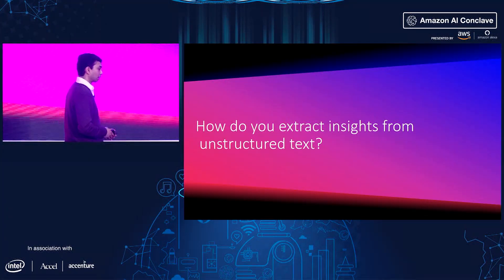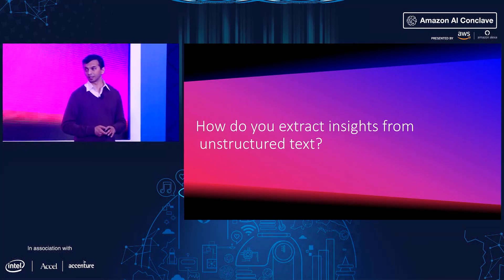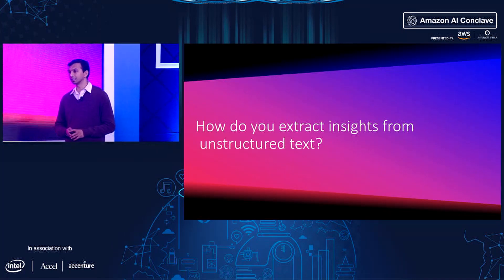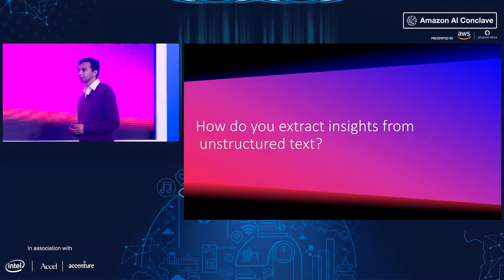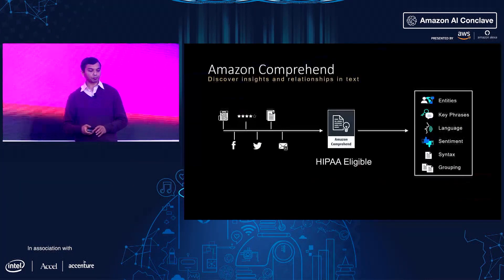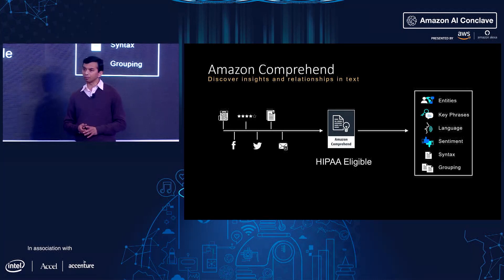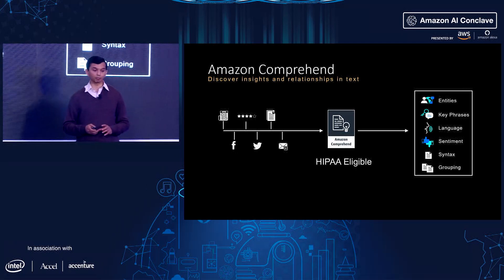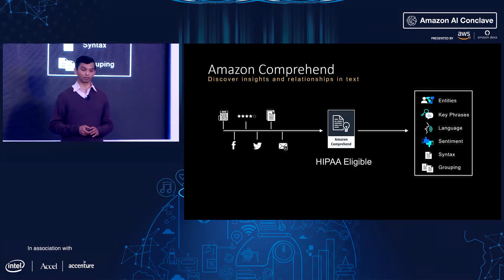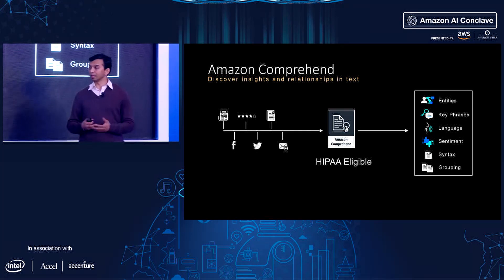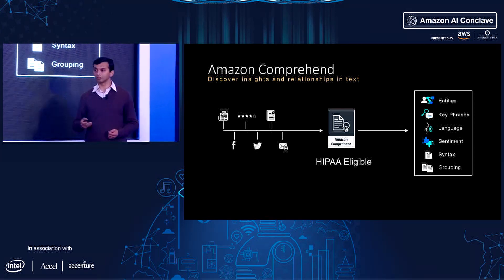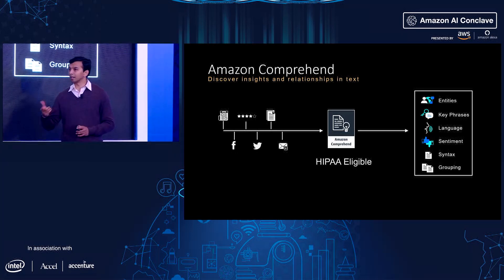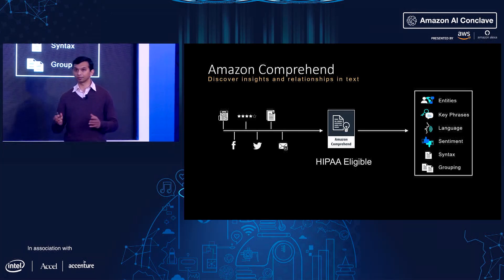The next problem we try to solve is how do you extract insights from unstructured text — a very common use case that keeps coming up. For that, we have Amazon Comprehend, launched in 2017 at re:Invent. When we launched it, we included entity extraction — given text, it extracts names of people, organizations, locations, dates, and numbers. It extracts key phrases — things like 'great price' or 'beautiful windows' from a hotel review.